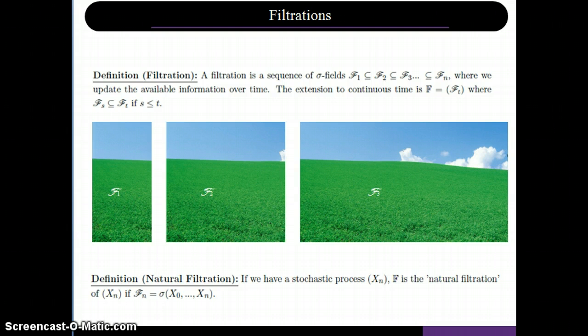Now we can touch on the definition of a natural filtration. If we have some stochastic process, xn, the natural filtration is a filtration that has no alterations and contains all the information from the process thus far, x0 all the way to xn.